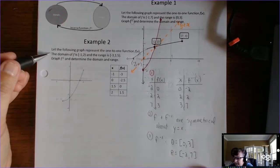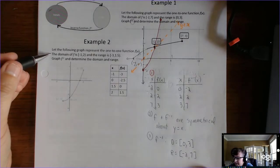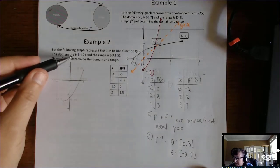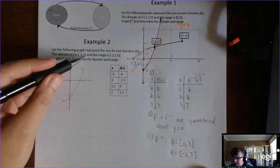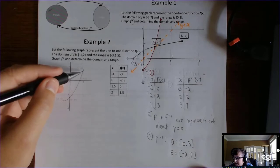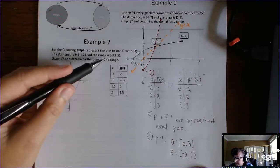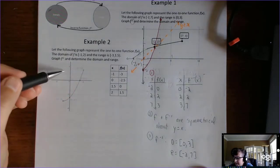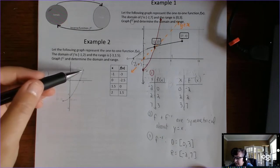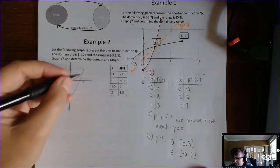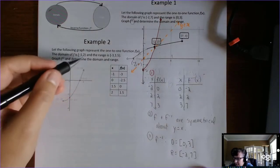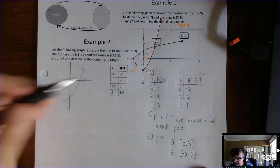In the second example, let the following graph represent the 1-to-1 function f of x. The domain of f is negative 1 to 2 — this time 2 has a parenthesis; you can see there's a little hole there. And the range is negative 3 to 1.5. This point is not really a point — it's a hole, an open boundary, but we have to put those in.